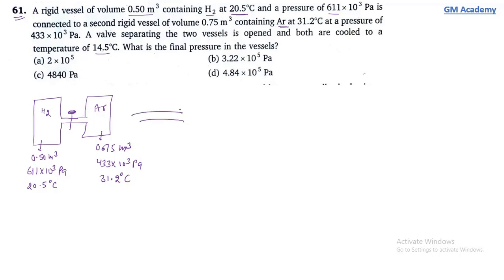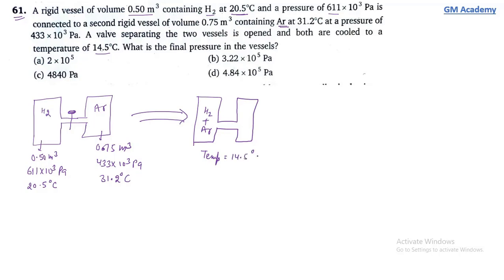When we open the stopping cork, the gases mix. The final temperature given is 14.5 degree centigrade. We need to find the final pressure in the vessel.